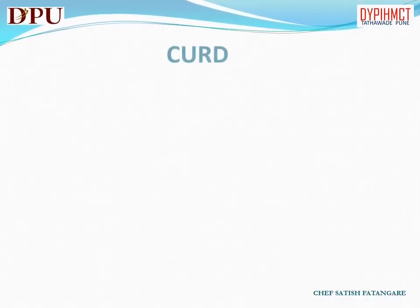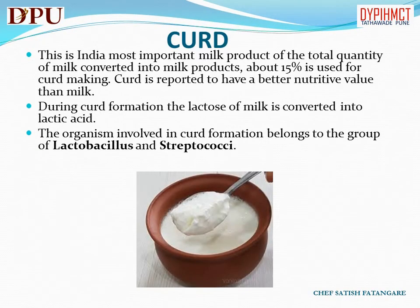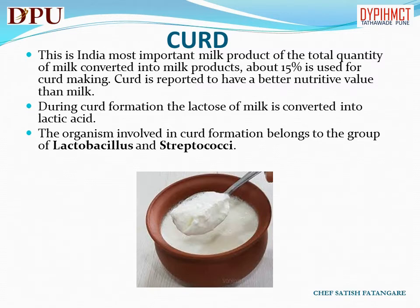In this slide we will discuss about curd. This is India's most important milk product; of the total quantity of milk converted into milk products, about 15% is used for curd making. Curd is reported to have a better nutritive value than milk. During curd formation, the lactose of milk is converted into lactic acid. The organism involved in curd formation belongs to the group of lactobacillus and streptococci.